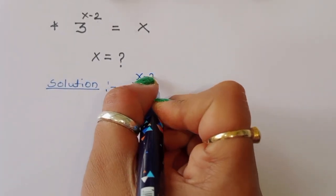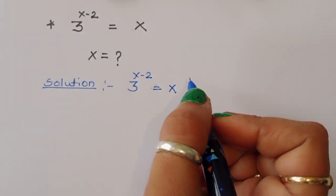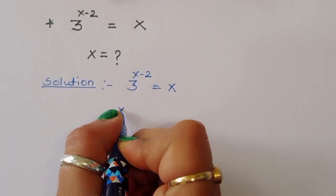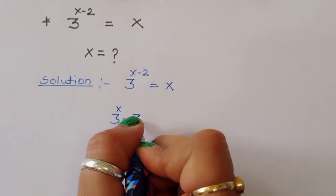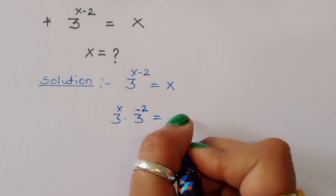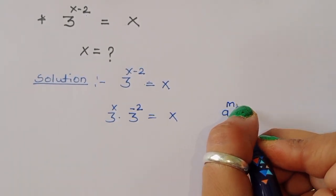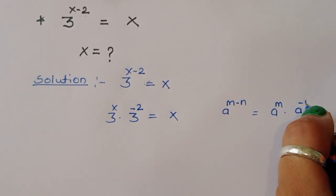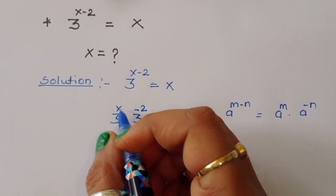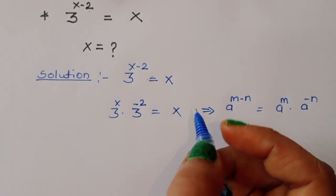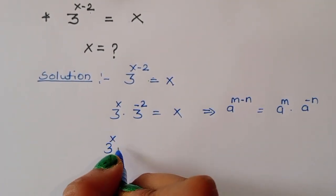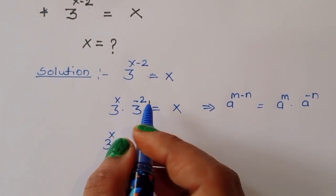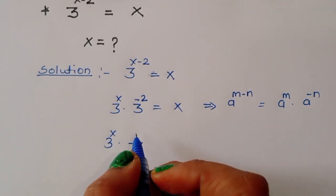3^(x-2) = x. We can write this as 3^x times 3^(-2) equals x, because using the formula a^(m-n) = a^m times a^(-n). So we get 3^x times 3^(-2) equals x. Now 3^(-2) means 1 over 9, so we have 3^x times (1/9) = x.